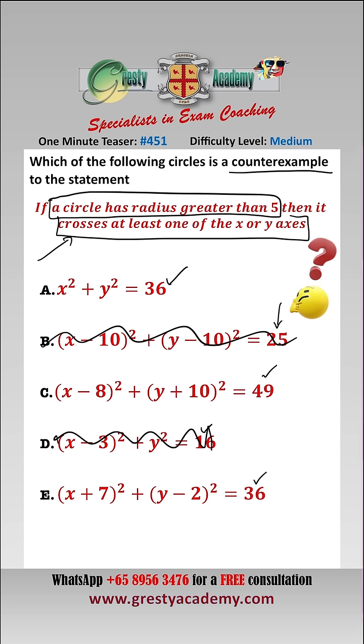do they satisfy the conclusion. Well, x² + y² = 36 is centered at the origin, so clearly it crosses the x and y axes. So that is not our counter example.